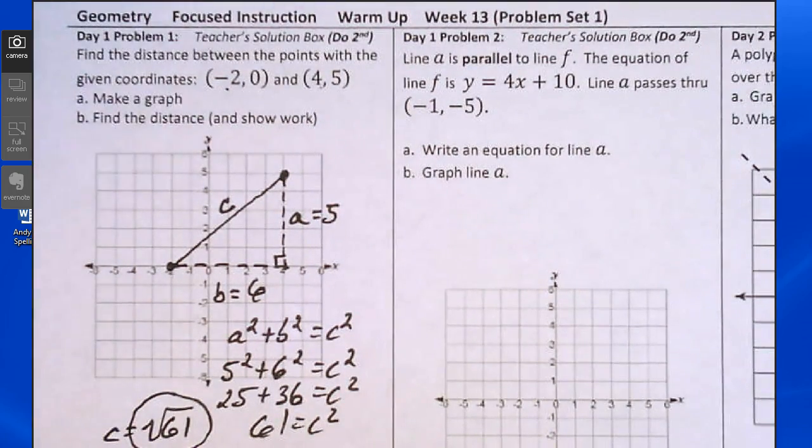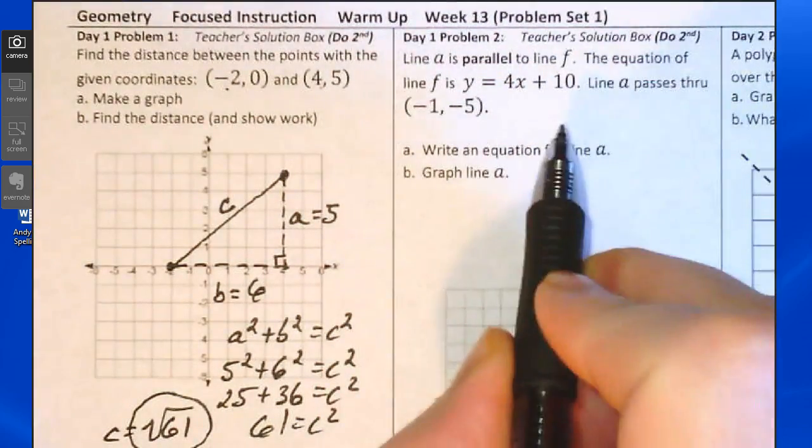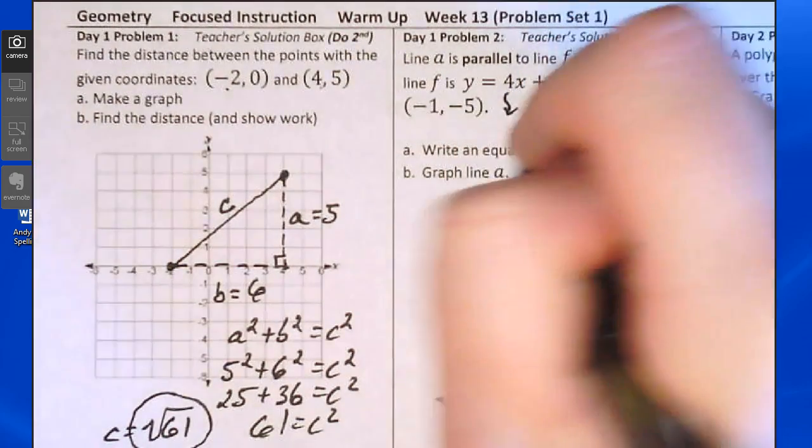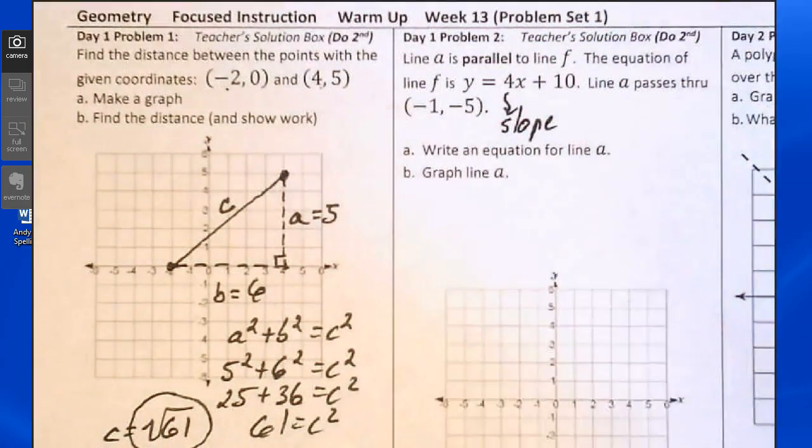Day 1, problem 2. Line A is parallel to line f. The equation of f is given here. If line A is parallel, then it will have the same slope as line f, and that 4 is the slope. Line A passes through this ordered pair. Write an equation for the line.